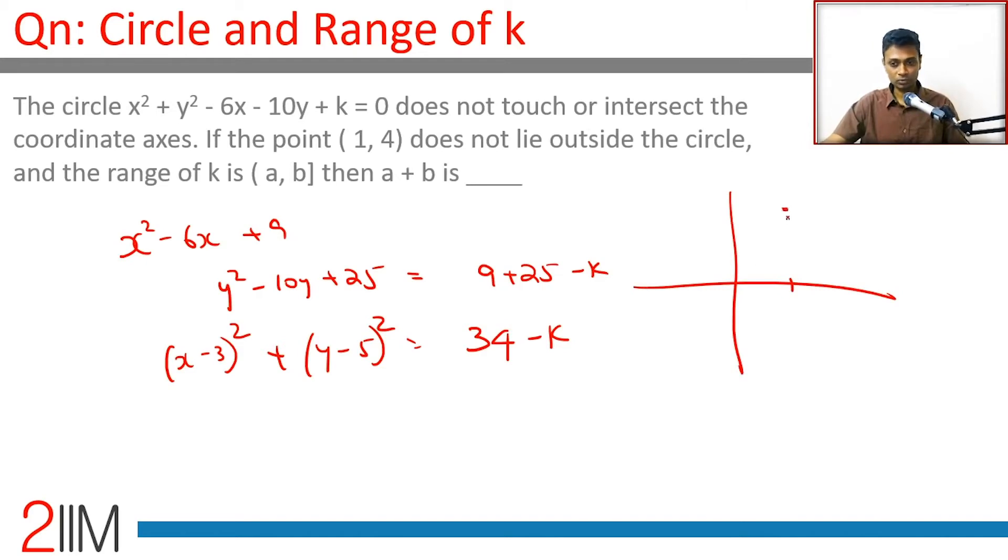Now let's go to (1, 4). (1, 4) does not lie outside the circle, that is either on the circle or inside the circle. Well, let's just find this distance first, (3, 5) to (1, 4).